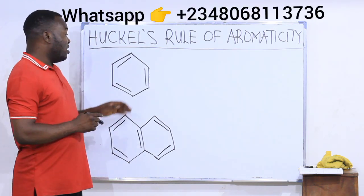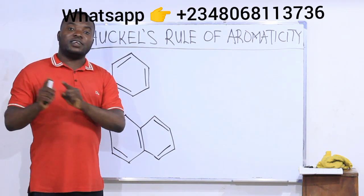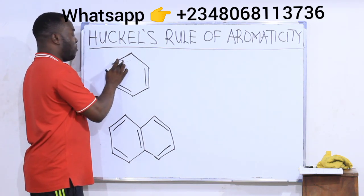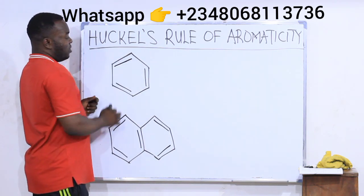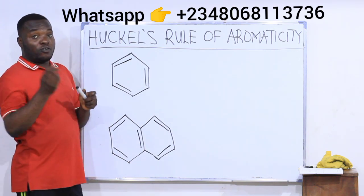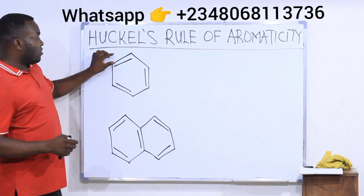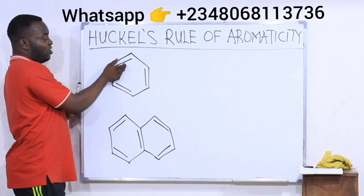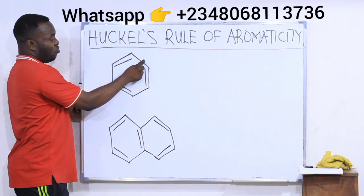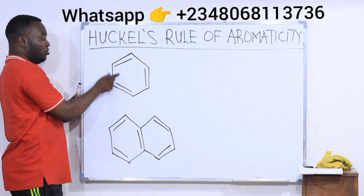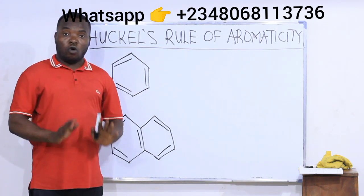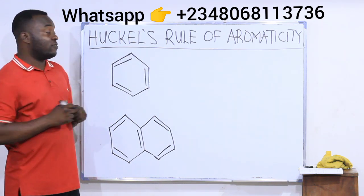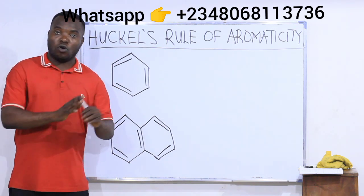Condition number two says the compound must be completely conjugated, meaning it must have sp2 hybridized carbons all over. There are two ways of knowing completely conjugated compounds — it must have double bonds in alternating positions. Moving in a clockwise direction: double bond, single bond, double bond, single bond, double bond, single bond. This compound is completely conjugated; all carbon atoms present are sp2 hybridized. So benzene has passed the second condition.